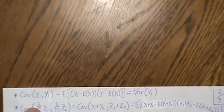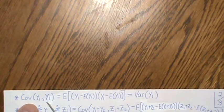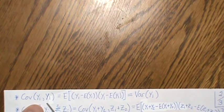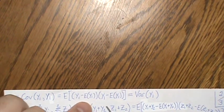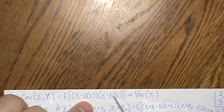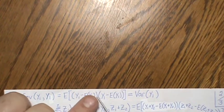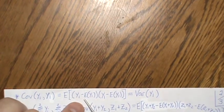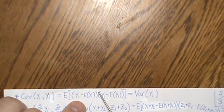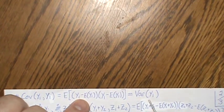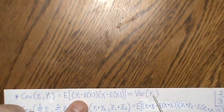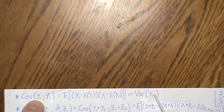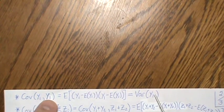The covariance of y1 and y1 is the expected value of (y1 minus its mean) squared, which is exactly the definition of variance. So the variance of y1 equals the covariance of y1 with itself.